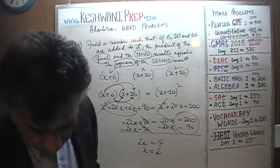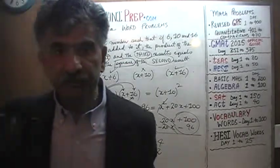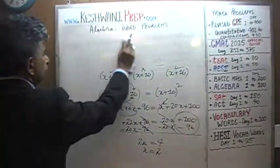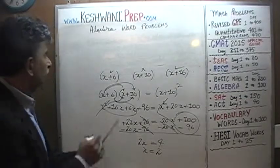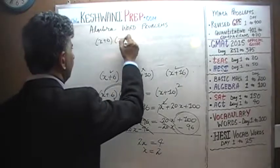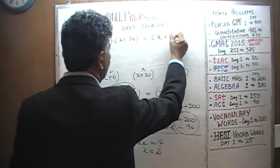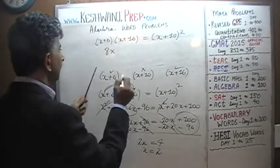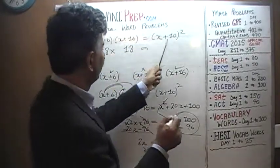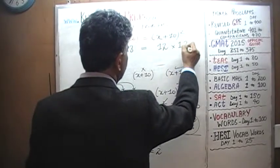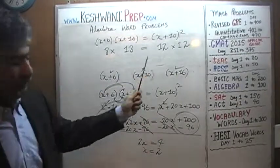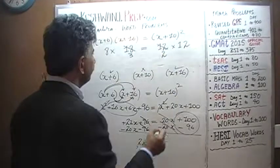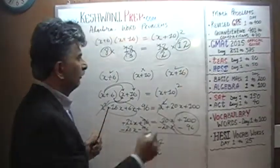Now we verify our answer. With x equal to 2: (x+6) times (x+16) has to equal (x+10) squared. We get 8 times 18 has to equal 12 squared, which is 12 times 12. Dividing both sides by 6: 18 divided by 6 is 3, and 12 divided by 6 is 2. So 8 times 3 is 24, and 2 times 12 is also 24. It checks out — it works.